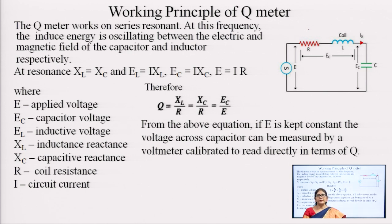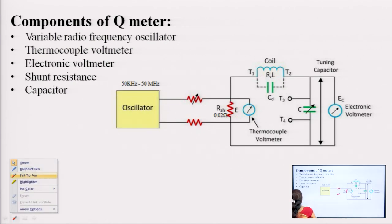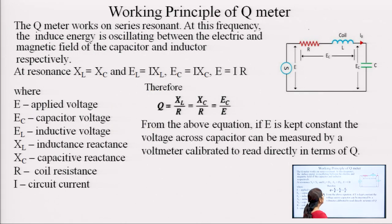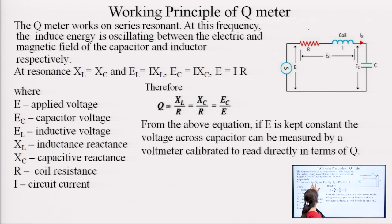The working principle of Q meter is based on the series resonant circuit. In a series resonant circuit, there are components — an inductor and capacitor connected in series. Here the resistance, inductance, and capacitance are shown. The resistance represents either the internal resistance of the inductor or a separate resistance.